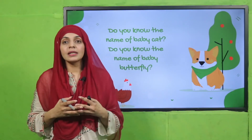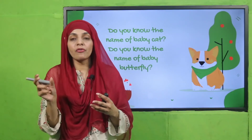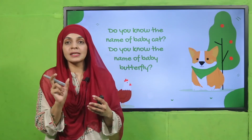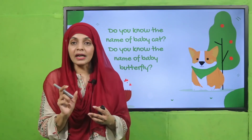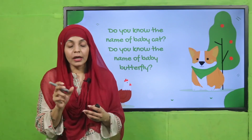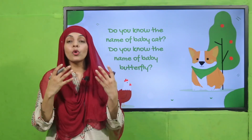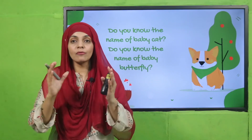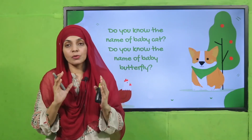By the way, butterfly babies come out of an egg. The first stage of a butterfly is called a caterpillar. In this way, animals have different names for their young ones when they are in their initial baby stage.